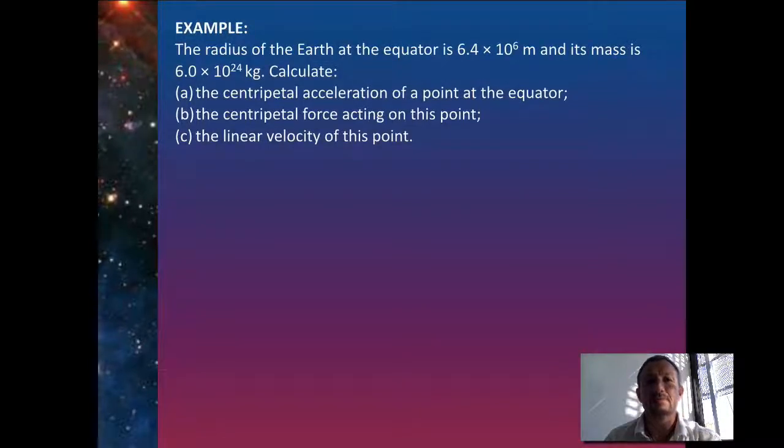So let's have a look at an example. Here we've got the radius of the Earth at the equator is 6.4 times 10 to the 6 metres, and its mass is 6 times 10 to the 24 kilograms. We're going to calculate the centripetal acceleration of a point at the equator,